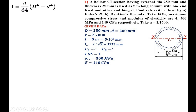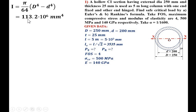For the hollow circular cross-section, the moment of inertia I = (π/64)(D⁴ − d⁴). Substituting the values of D and d, I = 113.2 × 10⁶ mm⁴.